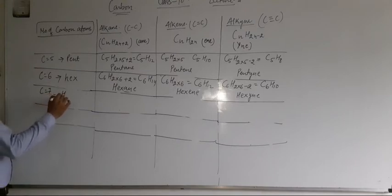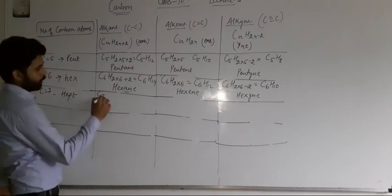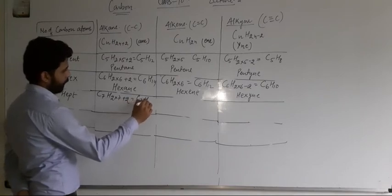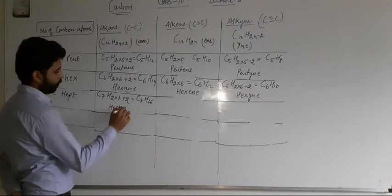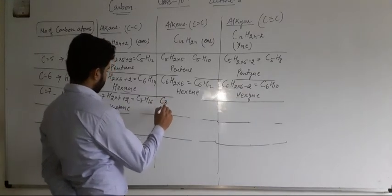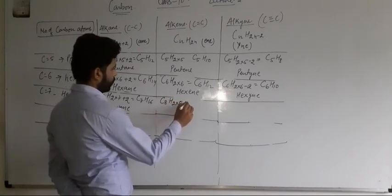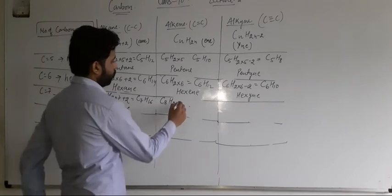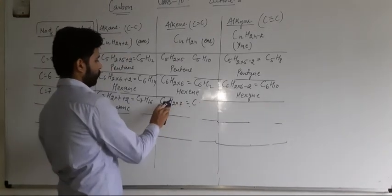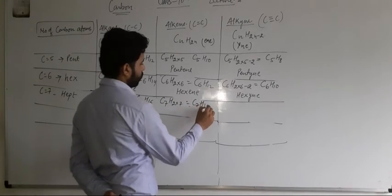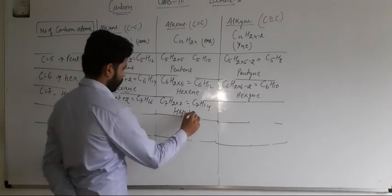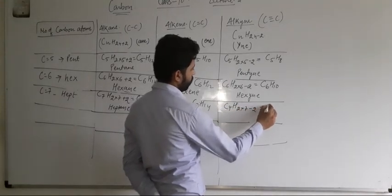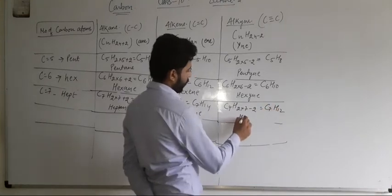For seven carbons, we have heptane. C7H2 into 7 plus 2, that is C7H16. Heptene is C7H14. And heptyne is C7H2 into 7 minus 2, which is C7H12.